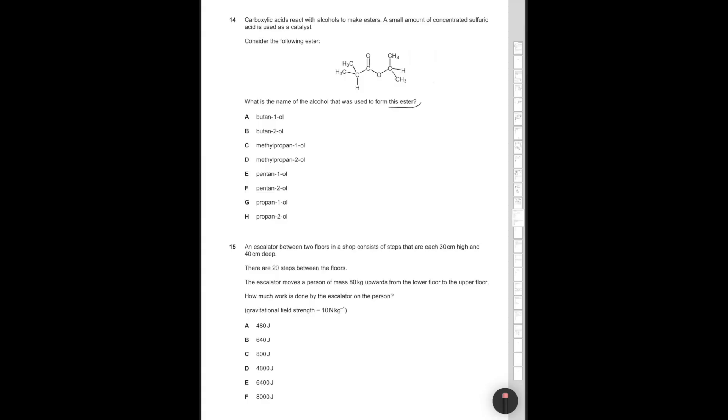Question 14. Carboxylic acids react with alcohols to make esters. A small amount of concentrated sulfuric acid is used as a catalyst. Consider the following ester. What is the name of the alcohol that was used to form this ester? The alcohol is the part that is bonded to the single bond oxygen in the ester. So this is going to be the alcohol part. If we draw this out in full, that's going to be C-O-H-H-C-H3-CH3. The longest straight carbon chain is 3, so it's going to be prop something. The alcohol is on the second carbon if we count from either direction, so it's going to be propan-2-ol. The correct answer is answer option H.